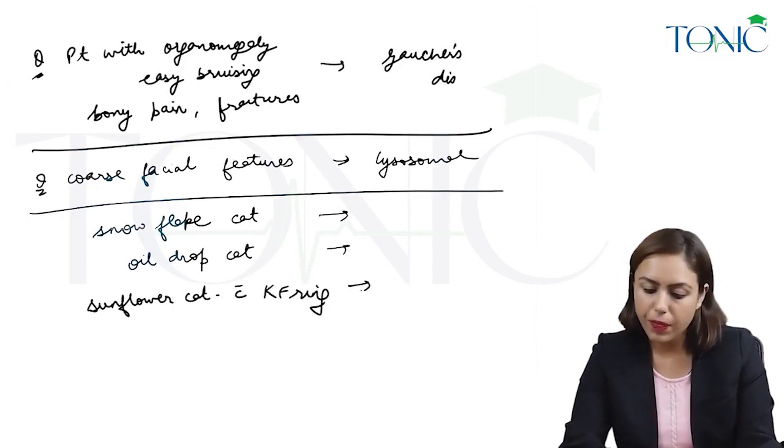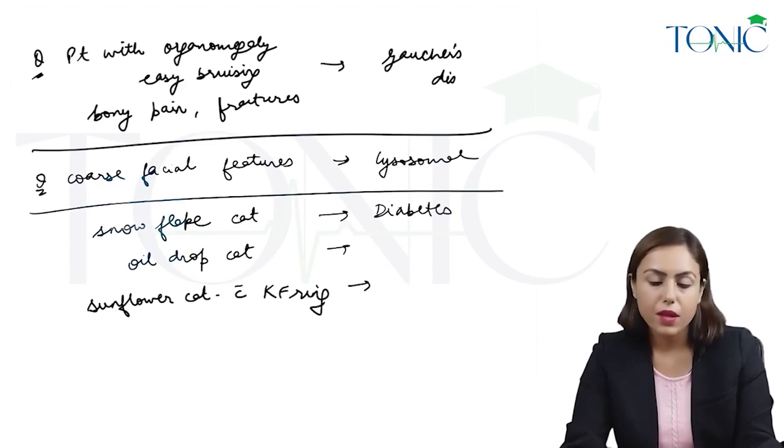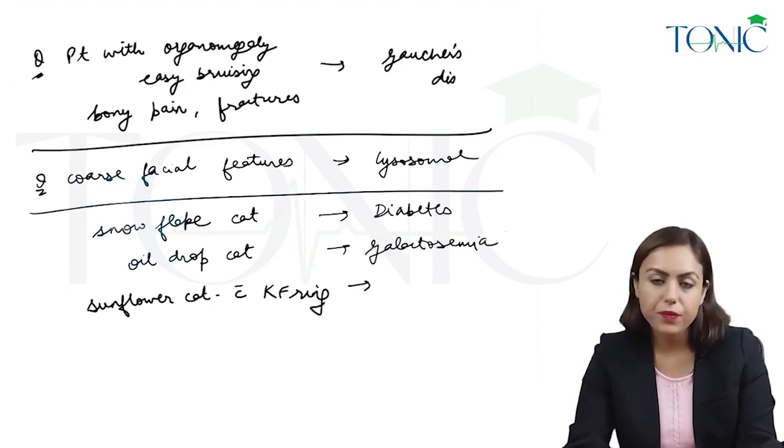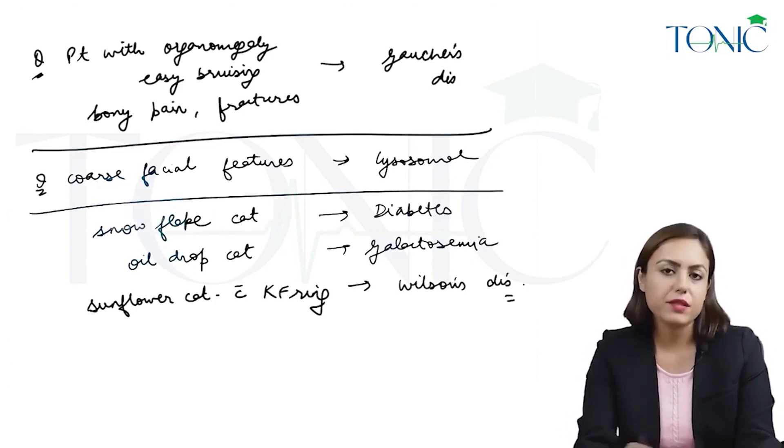So what is the diagnosis? Snowflake cataract occurs in diabetes. Oil drop cataract occurs in galactosemia. And sunflower cataract with Kayser-Fleischer ring occurs in Wilson's disease of copper excess.